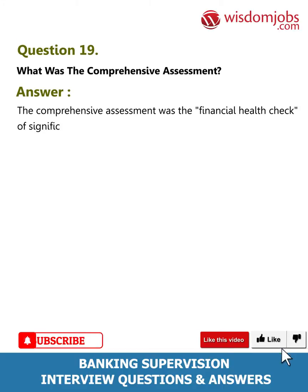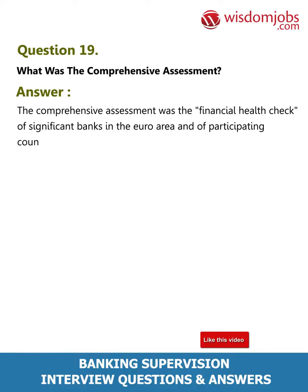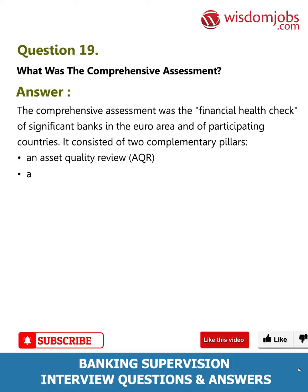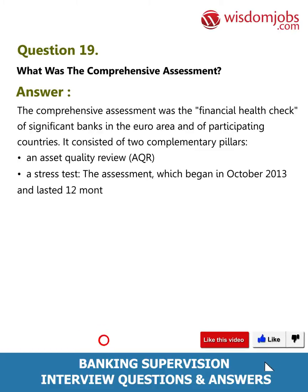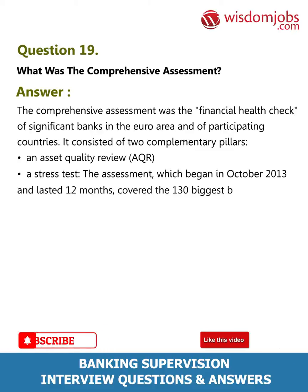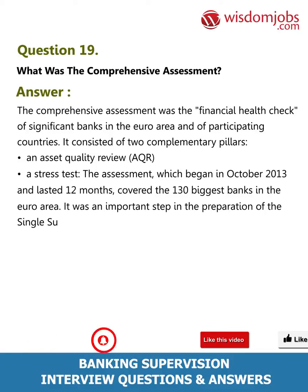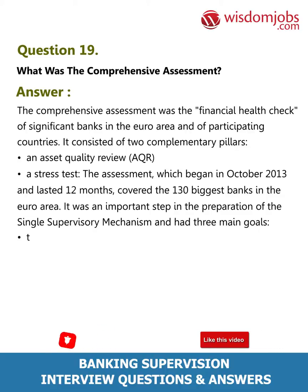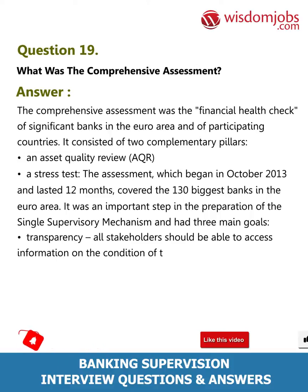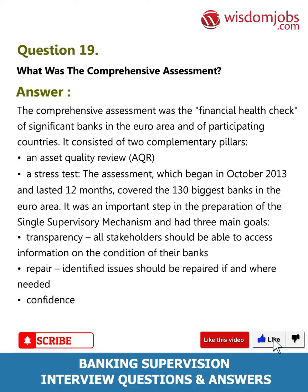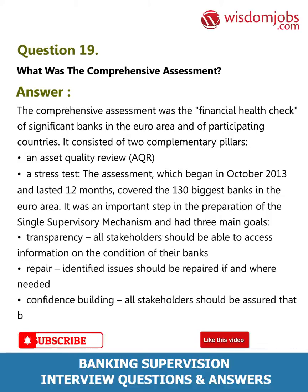Question 19: What was the comprehensive assessment? Answer: The comprehensive assessment was the financial health check of significant banks in the euro area and of participating countries. It consisted of two complementary pillars: an asset quality review (AQR) and a stress test. The assessment began in October 2013, lasted 12 months, and covered the 130 biggest banks in the euro area. It had three main goals: transparency, repair of identified issues, and confidence building.